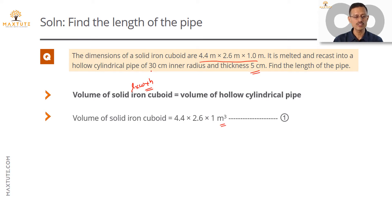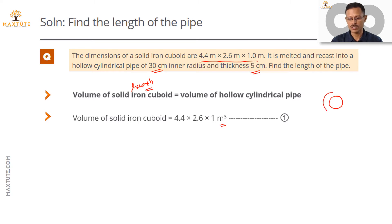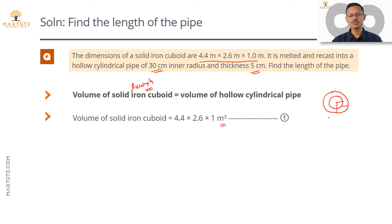We'll convert the units of the cylinder into meters as well. The cross-sectional area of the cylindrical pipe is going to look like a disc — there is an inner radius and the thickness of the pipe is also given, so we can find the outer radius. From the volume of the outer cylinder, if we subtract the volume of the inner cylinder, what is left gives us the volume of the metal used to form this hollow cylindrical pipe.